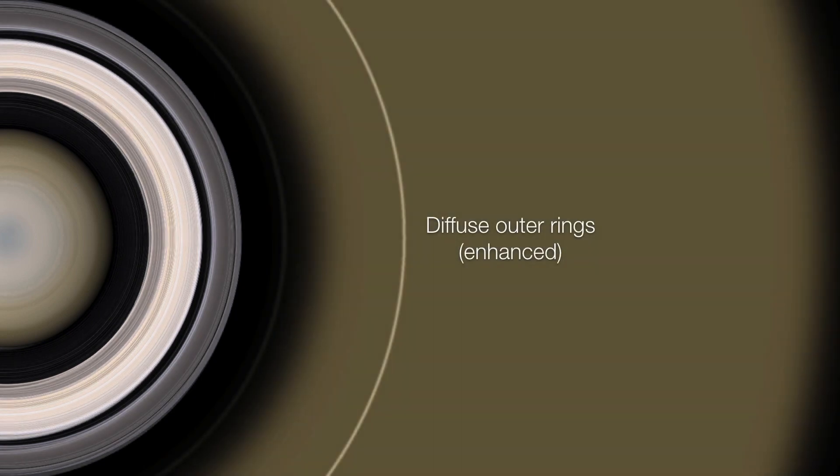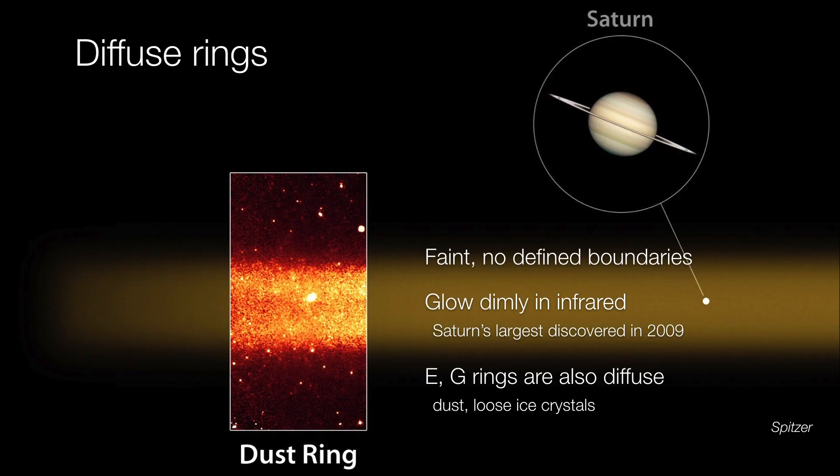Now, when we think of Saturn's rings, obviously these very nice, well-defined edges are the things we see in our photographs. However, Saturn is also surrounded by much more diffuse rings. They lack well-defined edges, and they're a lot fainter. So these are going to be something that you typically are going to find farther out from the planet. And such a diffuse ring was discovered in 2009. This is an infrared image that you see on the inset. This was made by the Spitzer Space Telescope. So Spitzer is an infrared telescope, and these diffuse rings can glow very dimly in the infrared.